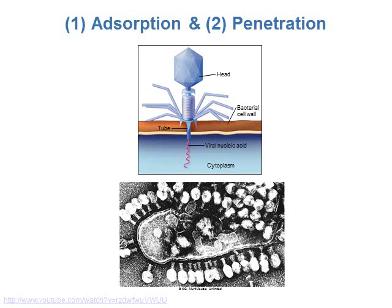This image shows absorption and penetration. It's important to stress: in bacteriophages, only the nucleic acid enters the host cell. The bacteriophage has a head region — the capsid — and essentially an injection mechanism that injects the viral nucleic acid into the host cell. The bottom picture shows an E. coli cell covered in bacteriophages, with some nucleic acid already inside.